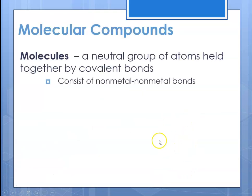For molecular compounds, these are neutral groups of atoms held together by covalent bonds. When you say molecular compound, it means something that is held together with covalent bonds, and that means non-metal to non-metal bonds. The non-metal elements are found in the upper right-hand portion of the periodic table.